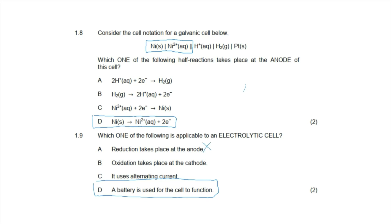Option B is incorrect because oxidation takes place at the anode, not the cathode. Option C is incorrect because direct current is required for an electrolytic cell.